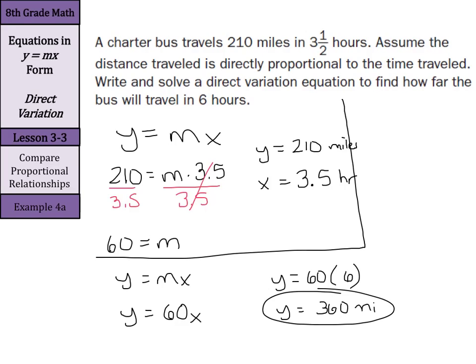So what did we actually do here? We took the first part of the information, the 210 miles and the 3.5 hours. We set these as variables: y being the distance, x being the time. We substituted it into our y equals mx and we solved for m. What this m is, is basically 60 miles per hour. That is our rate of change. So our equation is y equals 60x. That is the equation.